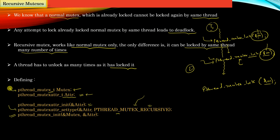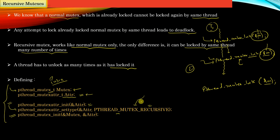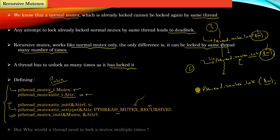These are the APIs you should use to define and declare a recursive mutex in your program. You can see it is the POSIX standard that provides inbuilt support for recursive mutexes. The lock and unlock APIs that operate on a recursive mutex are the same — pthread_mutex_lock and pthread_mutex_unlock.